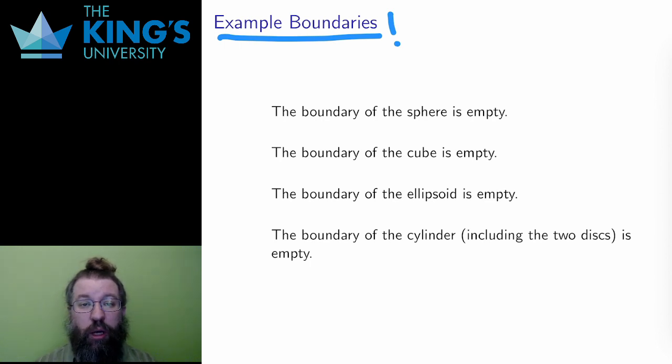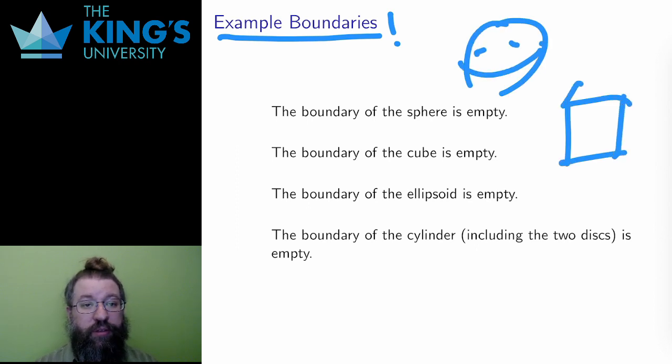First, let me start with some familiar objects in R3. The sphere, the cube, the ellipsoid, and the cylinder, including the top and bottom disks. All of these are closed surfaces.